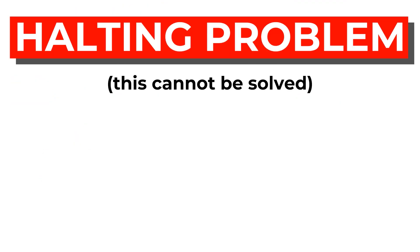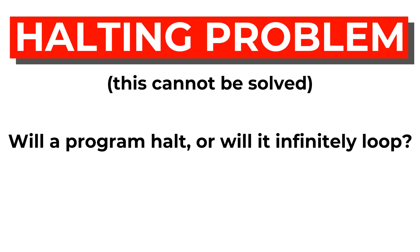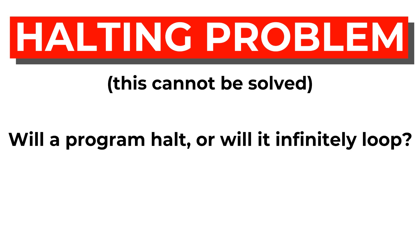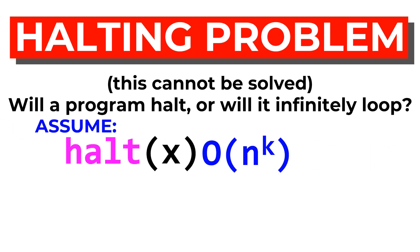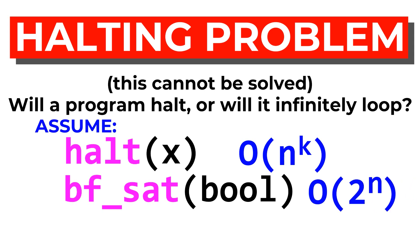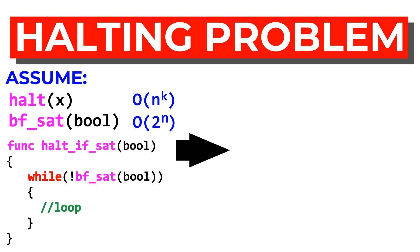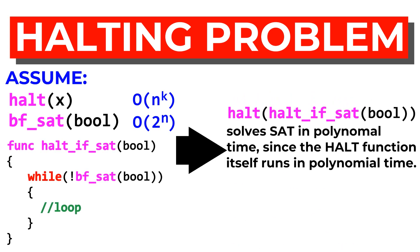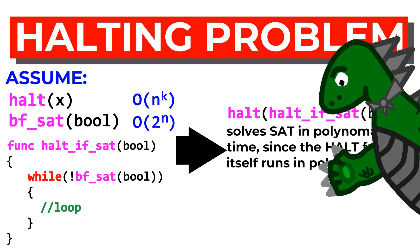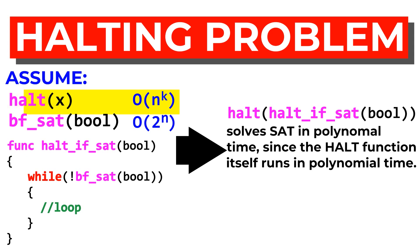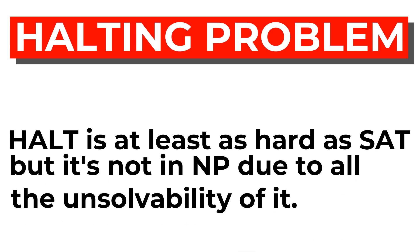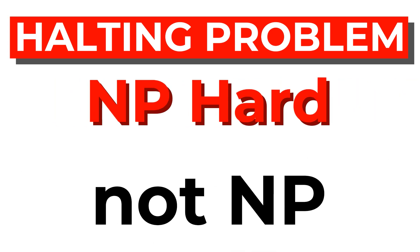For example, take the undecidable halting problem, which asks if any given algorithm will stop running, or loop forever. We know for a fact that this cannot actually be solved, but if we assume that the halting problem is solvable in polynomial time, we can use it to solve Boolean Satisfiability in polynomial time. If we take the program, which normally runs in exponential time, that brute forces a solution for Satisfiability, and only have it halt if we find a solution, we can use the halting problem solver to determine if the Boolean is Satisfiable. Oh cool, so what does that imply? Well, if we have an efficient solution to the halting problem, we also have an efficient solution to Boolean Satisfiability, so halt must be at least as hard as Satisfiability. But it's not in NP because it cannot be solved, so halting is NP hard, but not NP.